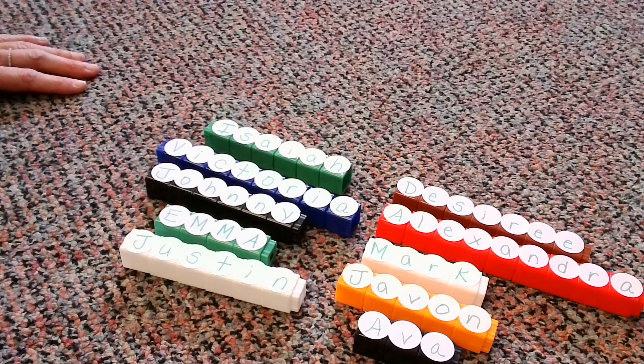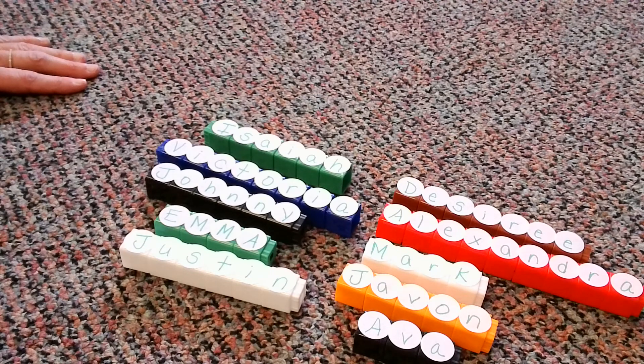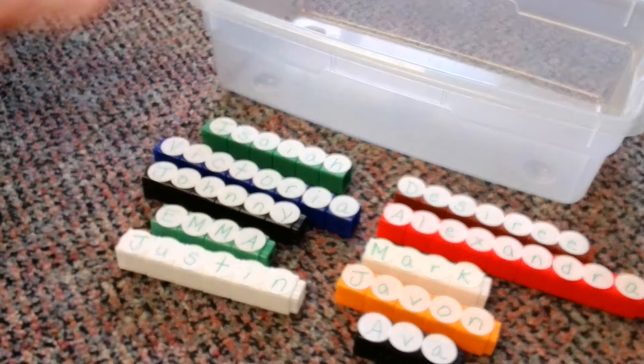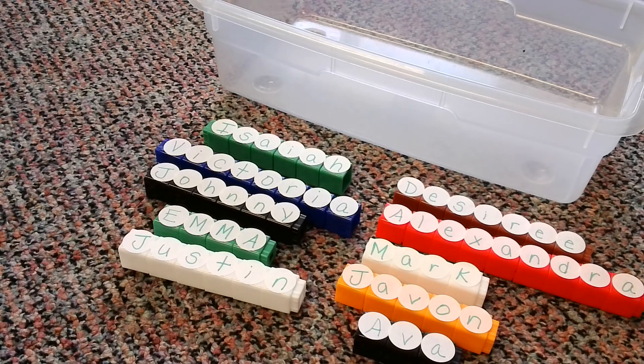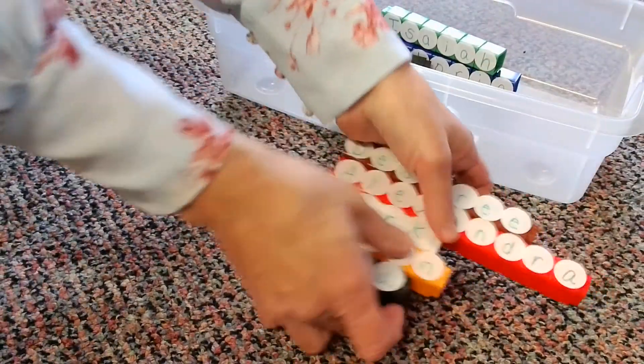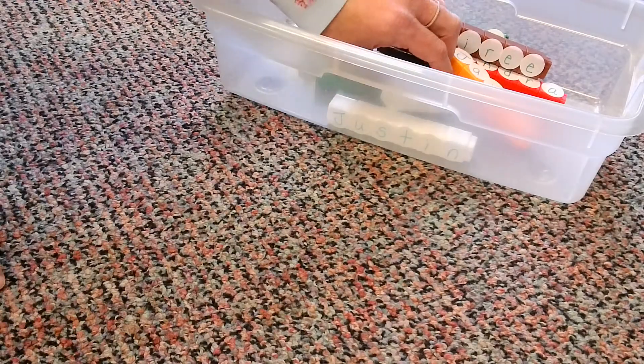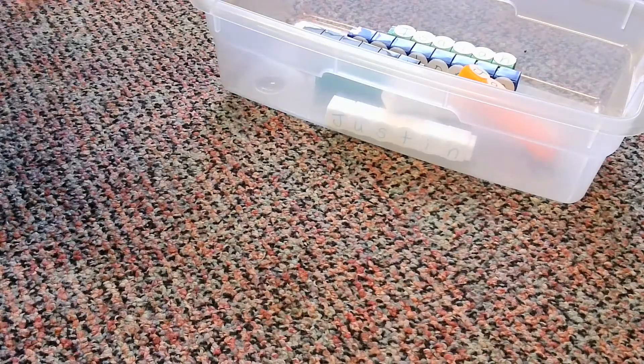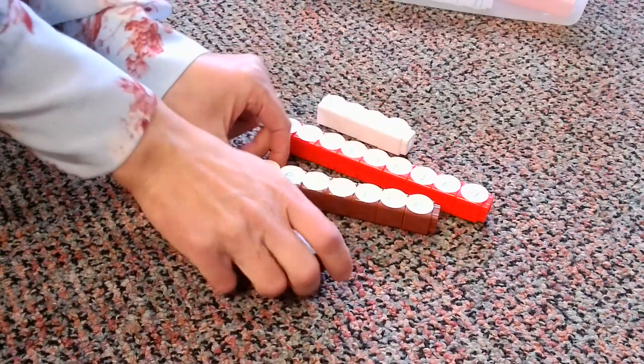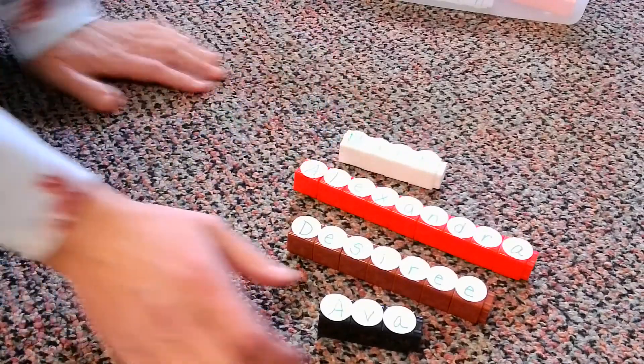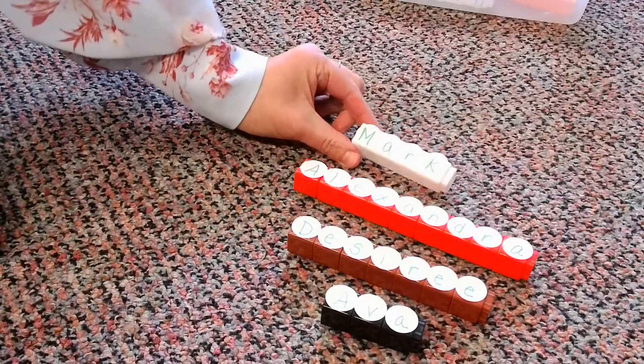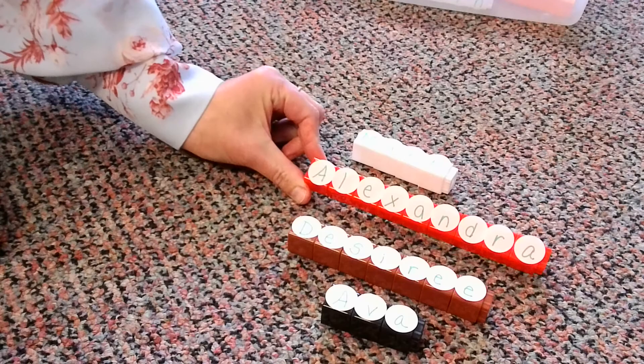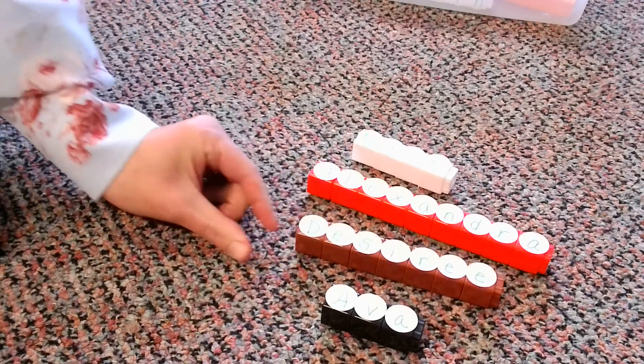So it seems like everybody's name has different amounts of letters. Some might be the same in this group. Some might be different. But what we're going to do now, we're going to take the names of these children. I'm going to put them in my container here. And I'm going to pick four of them out. And then we're going to compare them. So here I go. I'm just going to put them in like this. And I'm not going to look, but I'm going to pick. One, two, three, four. All right. Let's pull them out. Let me bring them up closer for you. So here we have Mark, Alexandra, Desiree, and Ava.